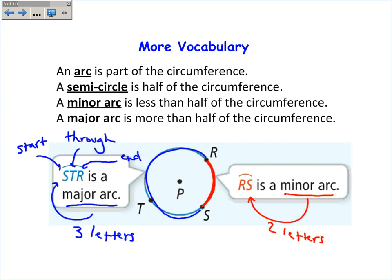So major arc STR starts at S, goes through T, and ends at R. And you can also call it arc RTS if you want. The order doesn't matter. Well, you start at the first one, you go through the second one, you end at the last one. But if it's reversed, that's okay.